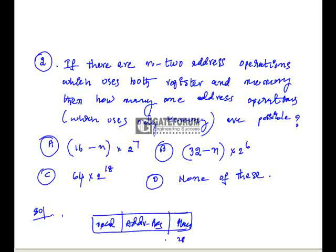This is 28-bits, this is 7-bits, this is 4-bits. 1-bit we have used for opcode, that is a mod-bit. So in this, how many 1-address operations are possible if you use only memory address?